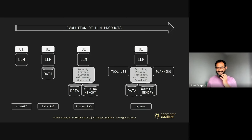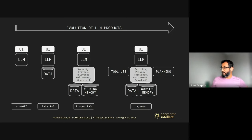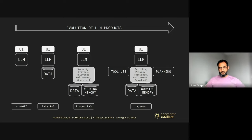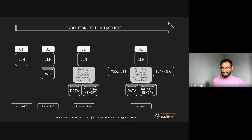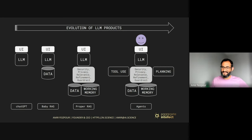Then the buzzword of the day: agents. Agents are pretty much similar to what a proper RAG structure would be, except you also add other software components or modules that allow tool use and planning. If you add these capabilities to your system, you have what we can call an agent. The reason we call them agents is that they have agency — they can choose how to plan a task and what tools to use to execute it.